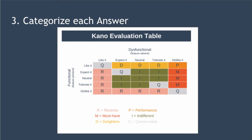Step three is to categorize each answer. Based on the answer given by one customer for a feature, you can identify how they view that feature using the categorization table. You take the customer's answer to your functional question and their answer to your dysfunctional question and cross-reference using the table. For example, if your customer expected the feature to be present and disliked it if it wasn't present, that's a must-have feature. Conversely, if the customer would like the feature to be present but could tolerate it if it wasn't there, that's a delighter feature — one that will delight them but that they don't expect.